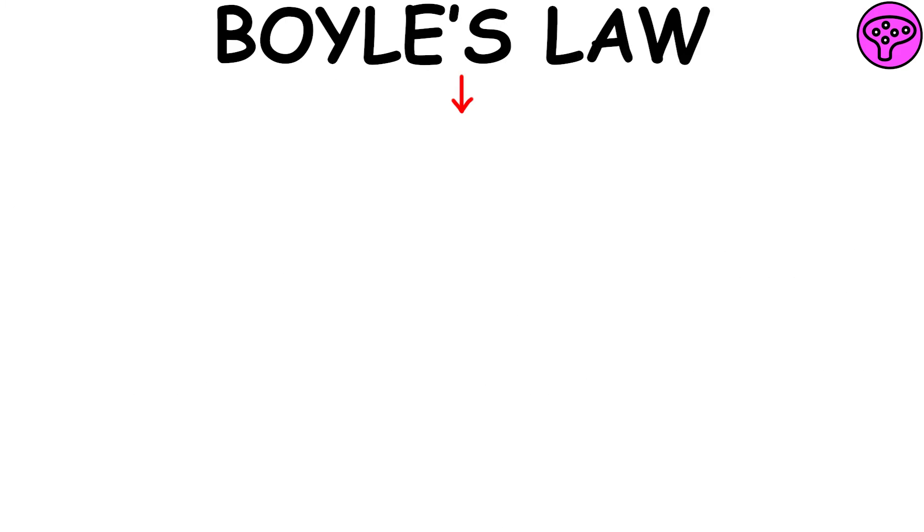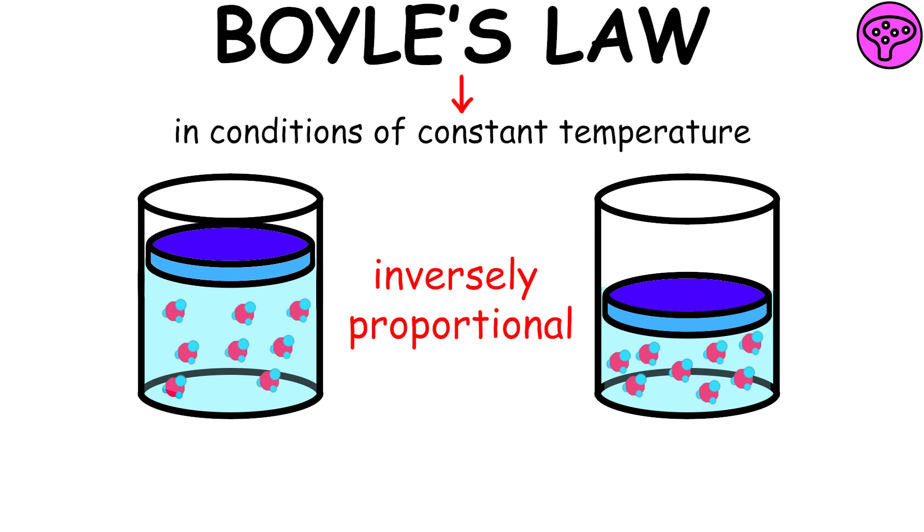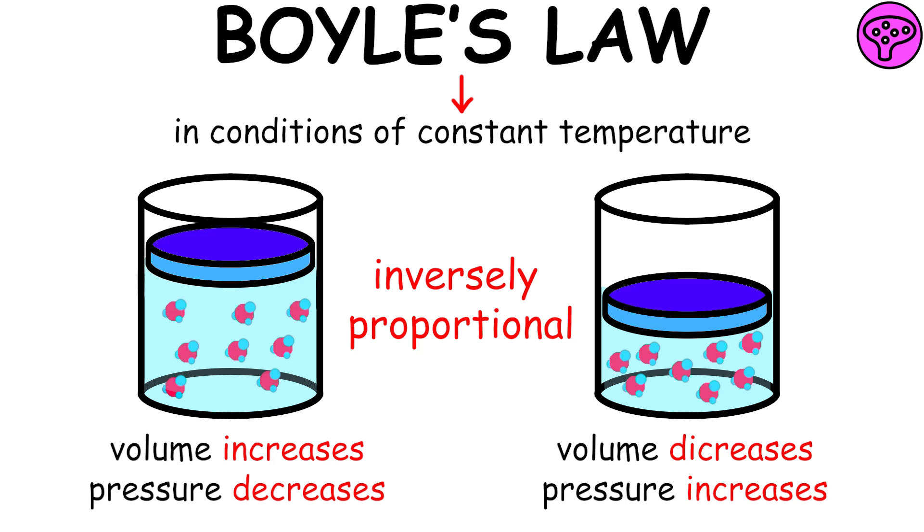Boyle's Law states that in conditions of constant temperature, the pressure of a perfect gas is inversely proportional to its volume, meaning that the product of the pressure of the gas by the volume it occupies is constant.